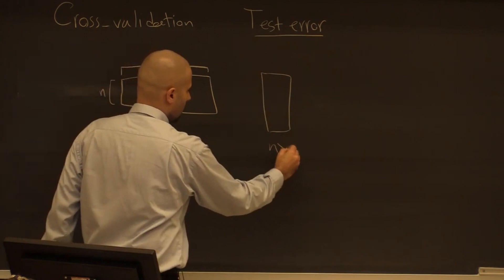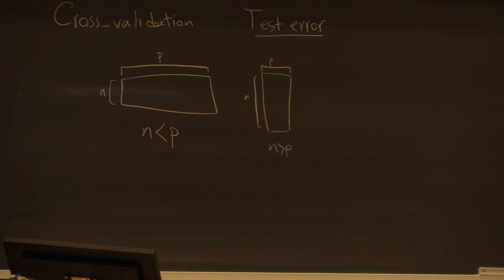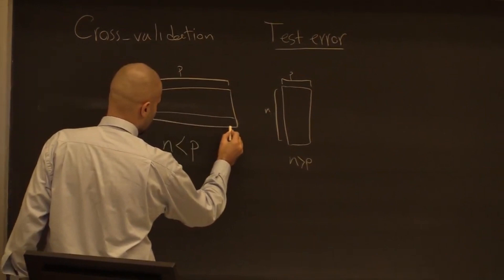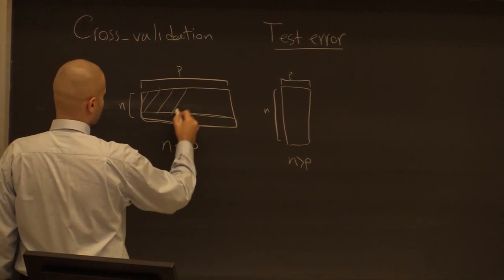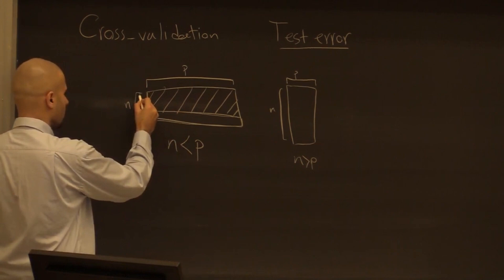The ideal situation is when we have large N compared to P — a tall, skinny dataset. If we want a separate dataset just for testing, then the actual data accessible for training and hyperparameter tuning will be even shorter. So the curse of dimensionality actually exacerbates here.